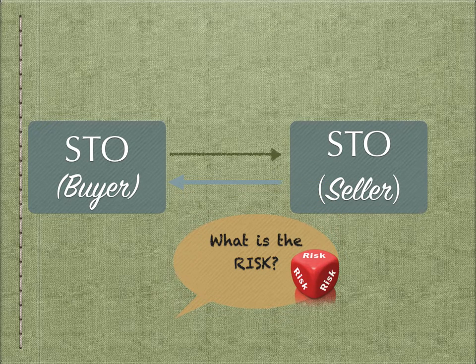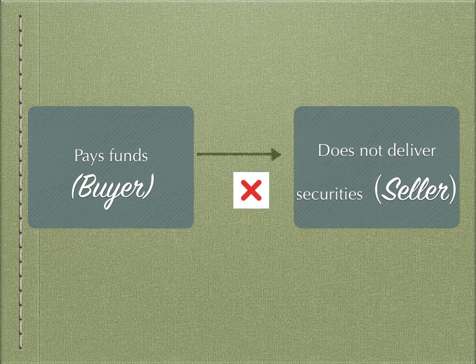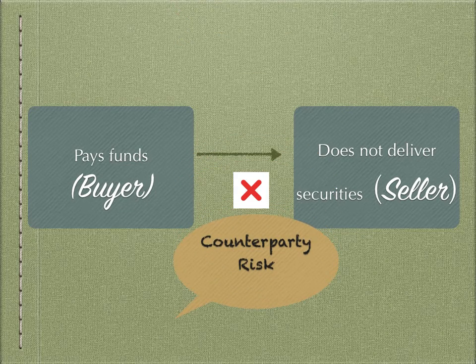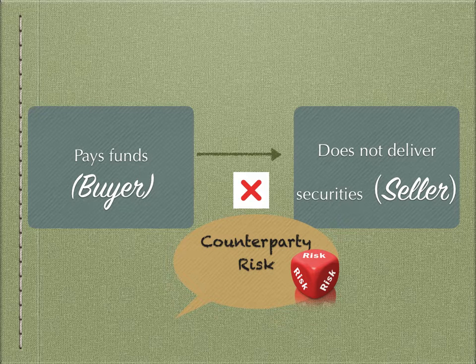What is the risk? The risk involved is that one of the parties performs but the other does not. For example, the buyer pays the funds to the seller, but the seller does not deliver the securities. Such a risk is called counterparty risk. This risk is inherent in any OTC product and in any system that does not follow the DVP (Delivery Versus Payment) basis for settlements. Counterparty risk is the risk that one party performs and the other fails to perform.